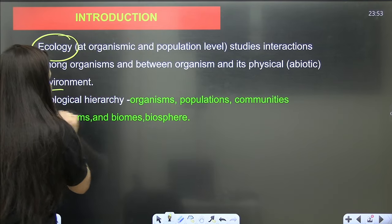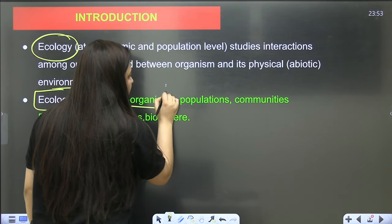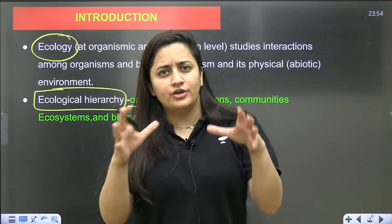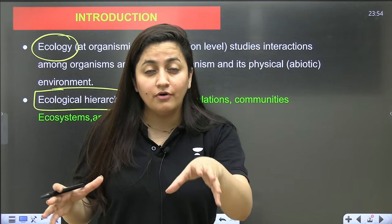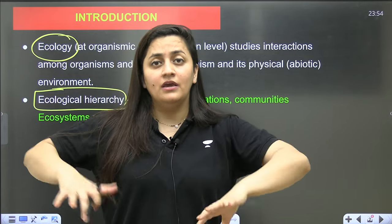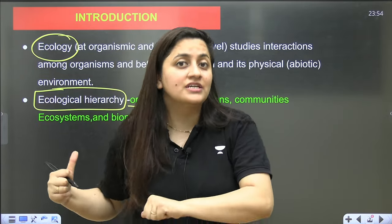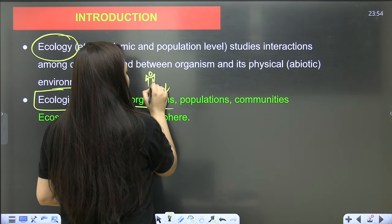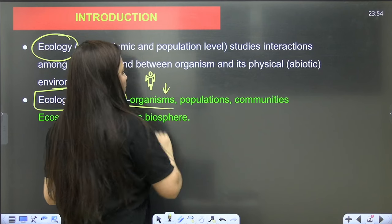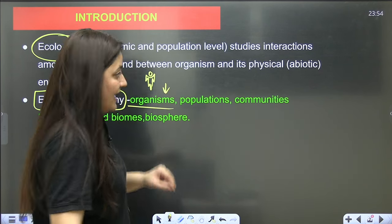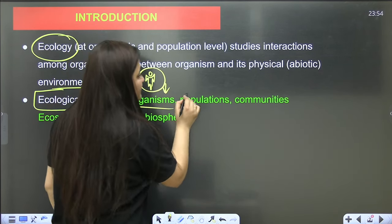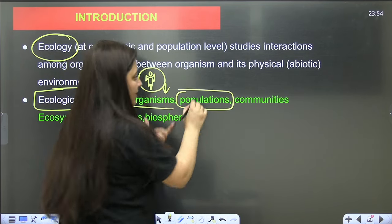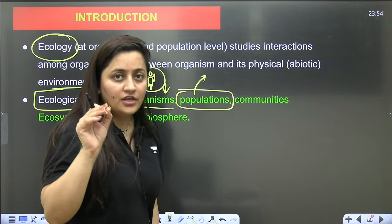When you talk about the ecological hierarchy, we start with the organism. Just like the cell is the basic unit of life, cells form tissues, tissues form organs — similarly in the ecological hierarchy, first you talk about the organism.